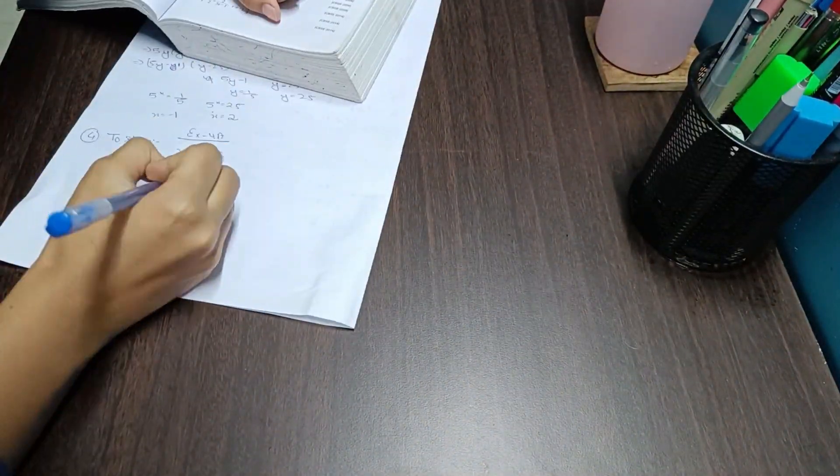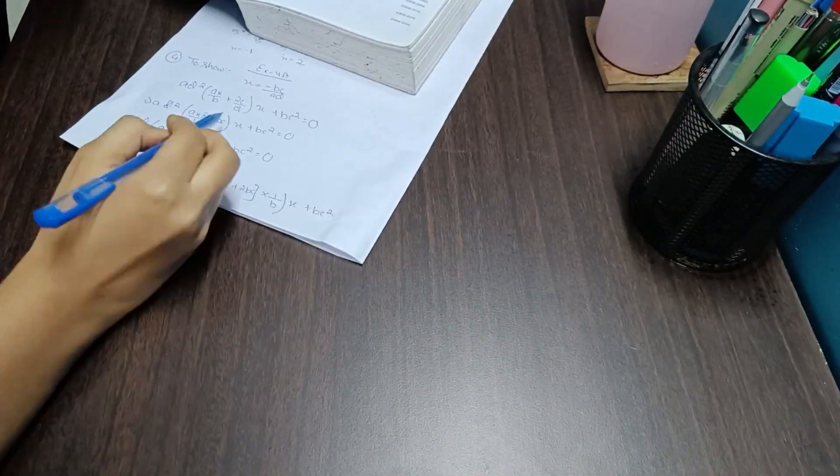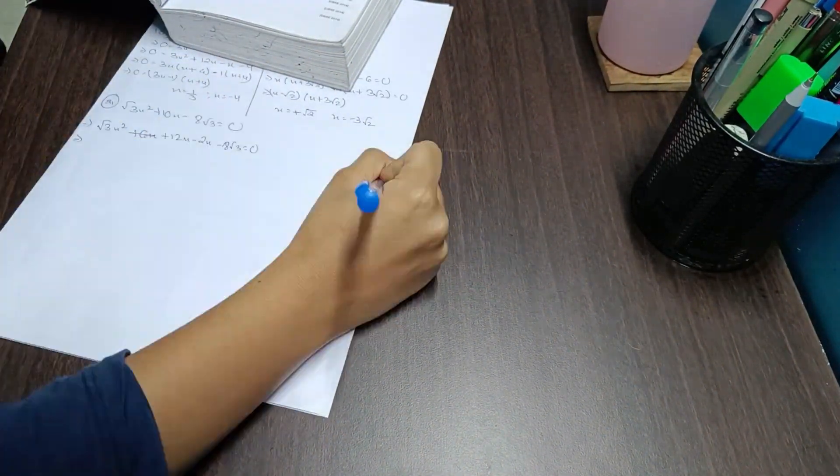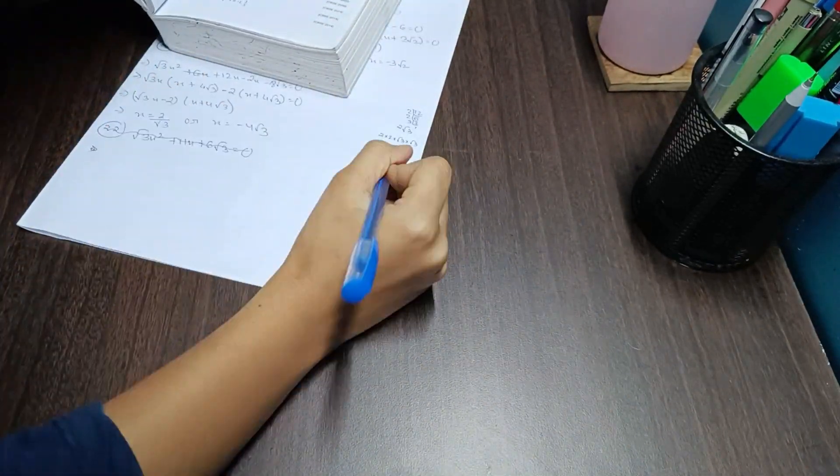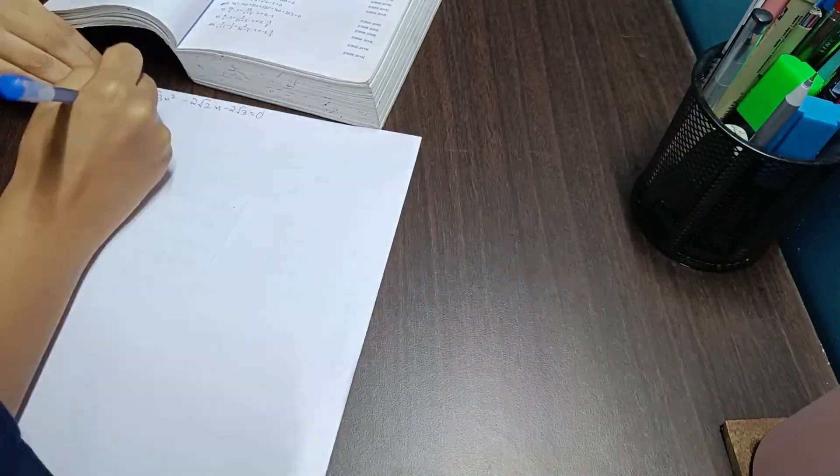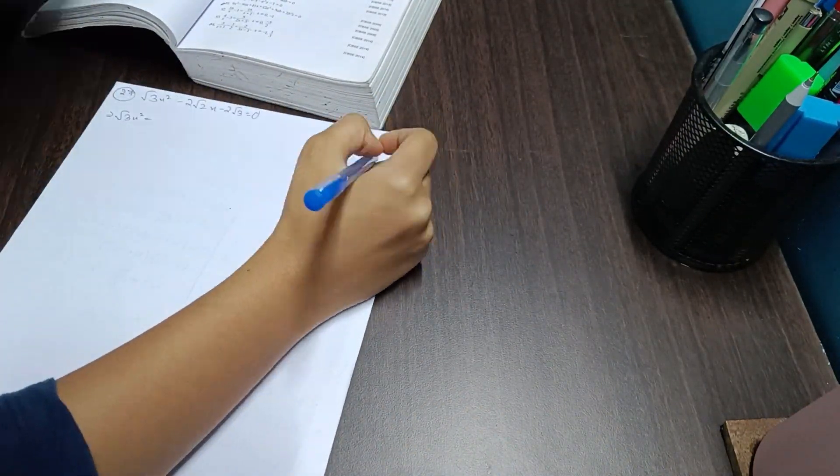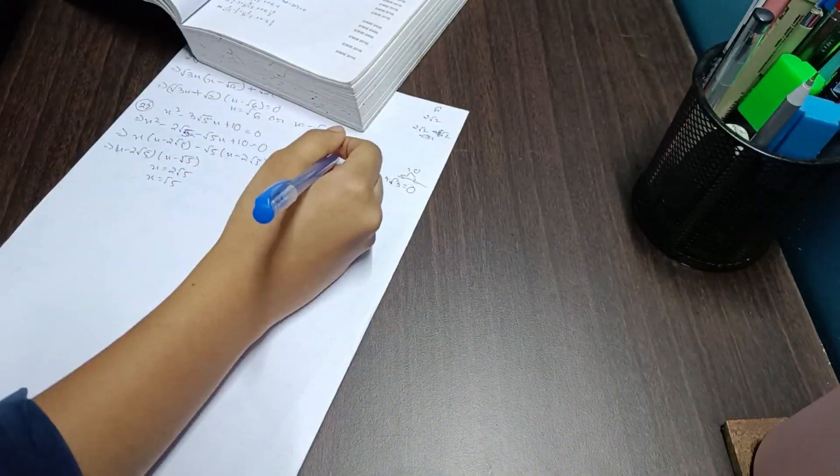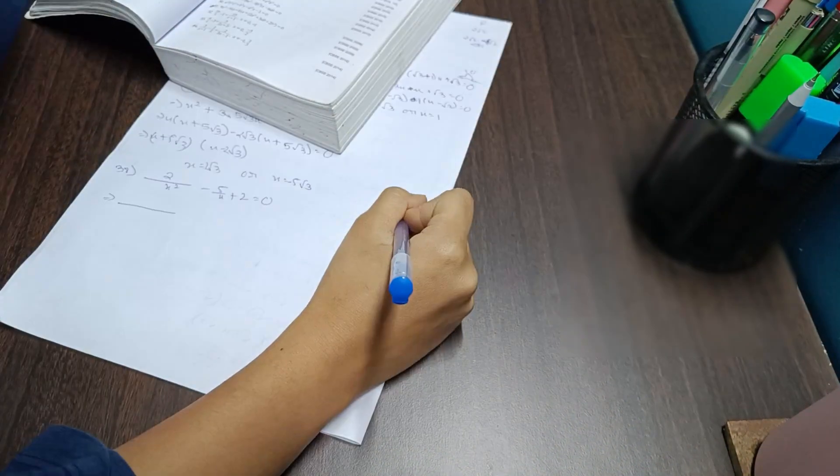So here I was practicing the questions from the chapter Quadratic Equations from the book of RS Aggarwal and it took me 7 hours to complete because this chapter has a lot of questions including the examples. Even after skipping a few of them, it took me a lot of time to complete, and as a result I only managed to do maths and science on that day and not the rest of the things on my to-do list.